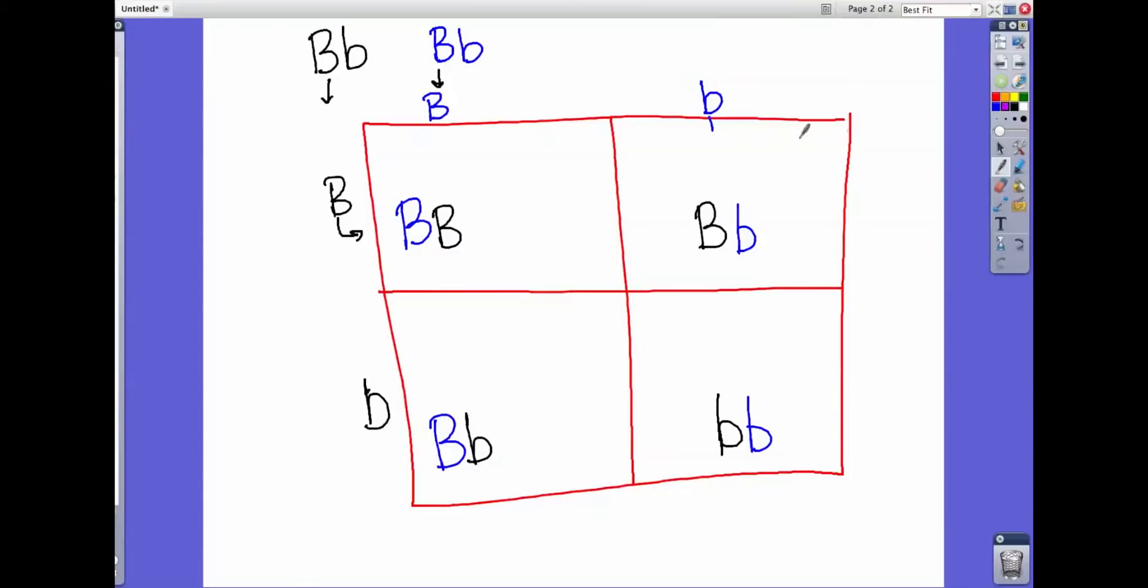And in this case we have three squares that have a dominant gene in it. So whenever there is a dominant gene, the dominant gene always wins no matter what, even if there is a recessive in there. So three out of four squares have a dominant gene, and only one square has two recessive genes. Remember that recessive can only win if the dominant are not present.